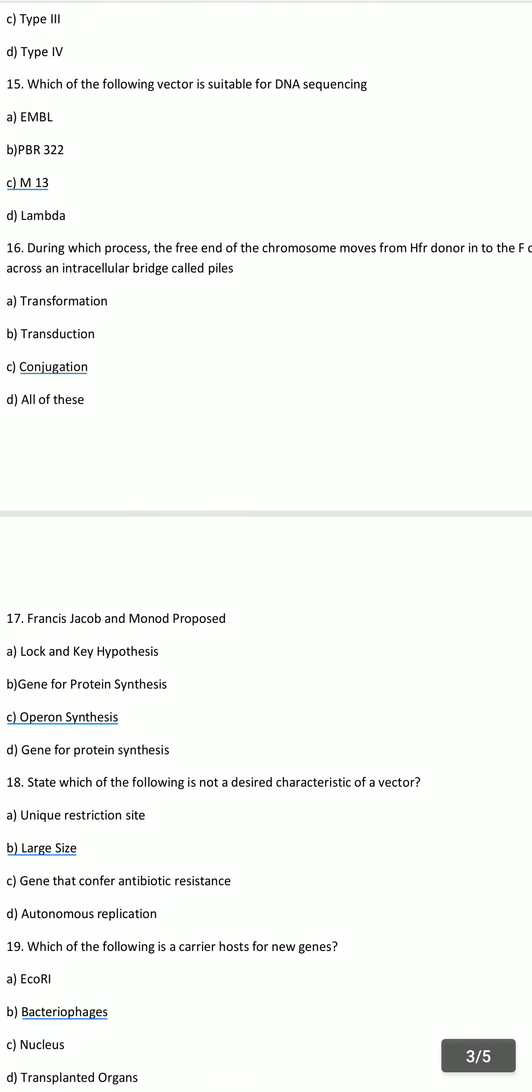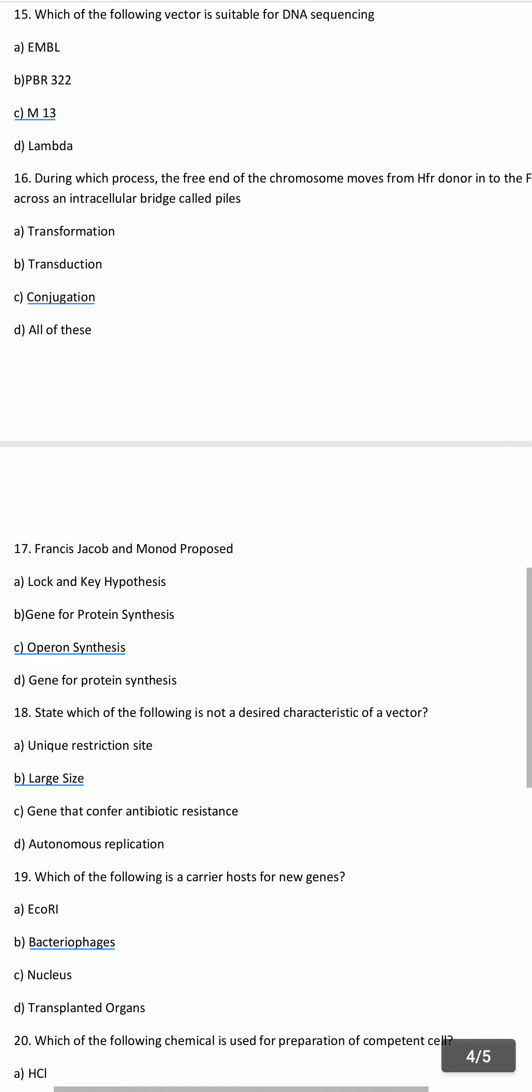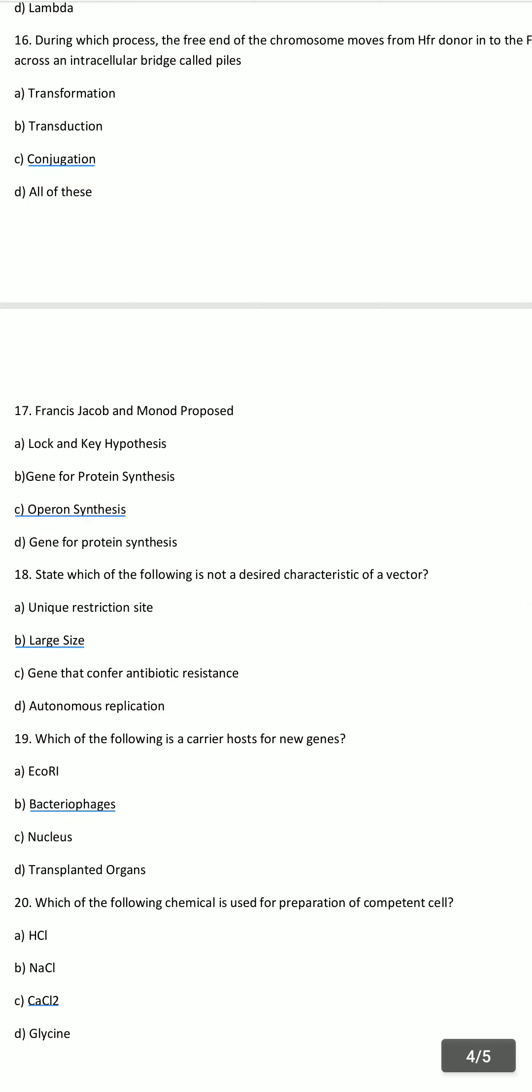Francis Jacob and Monod proposed operon synthesis. Which of the following is not a desired characteristic of vector? Large size. Which of the following is a carrier host for new genes? Bacteriophages. Which of the following chemical is used for the preparation of competent cells? Calcium chloride.